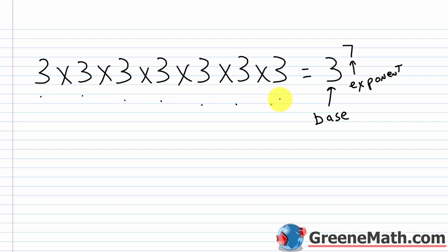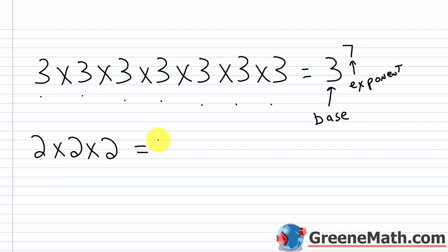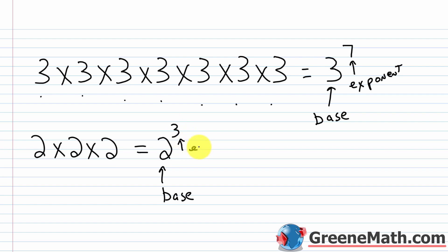Let's think about another example. Let's say I had 2 times 2 times 2. If I want to write this in exponent form, I have this number 2 — that's going to be my base, it's the number we're multiplying by itself. And then I'm doing it 3 times: 1, 2, 3. I have 3 factors, so 3 is the exponent.